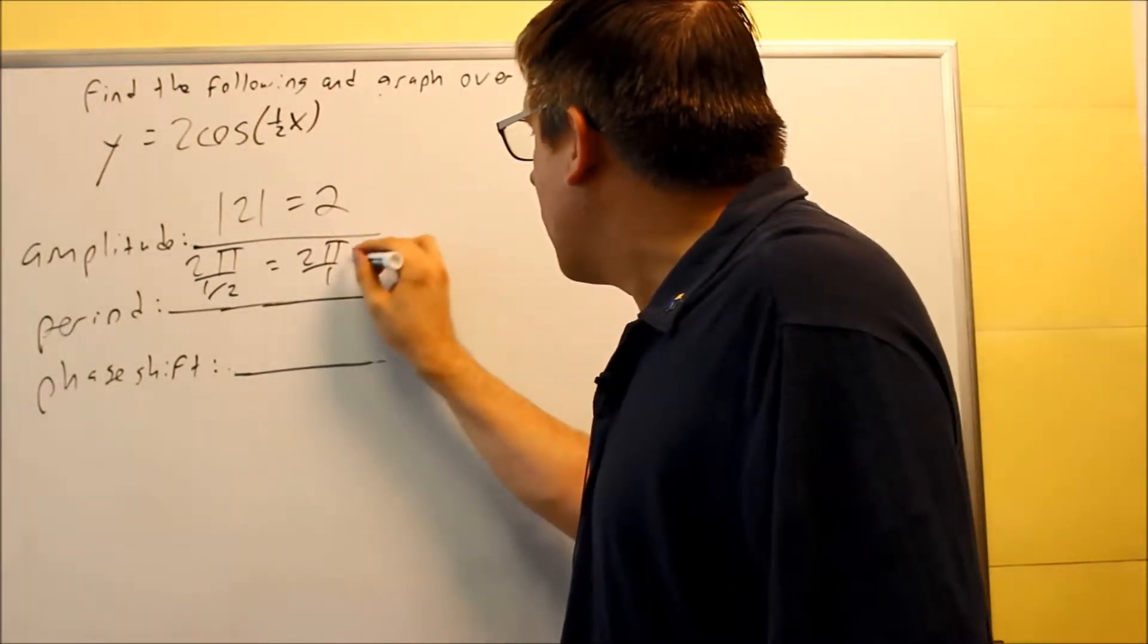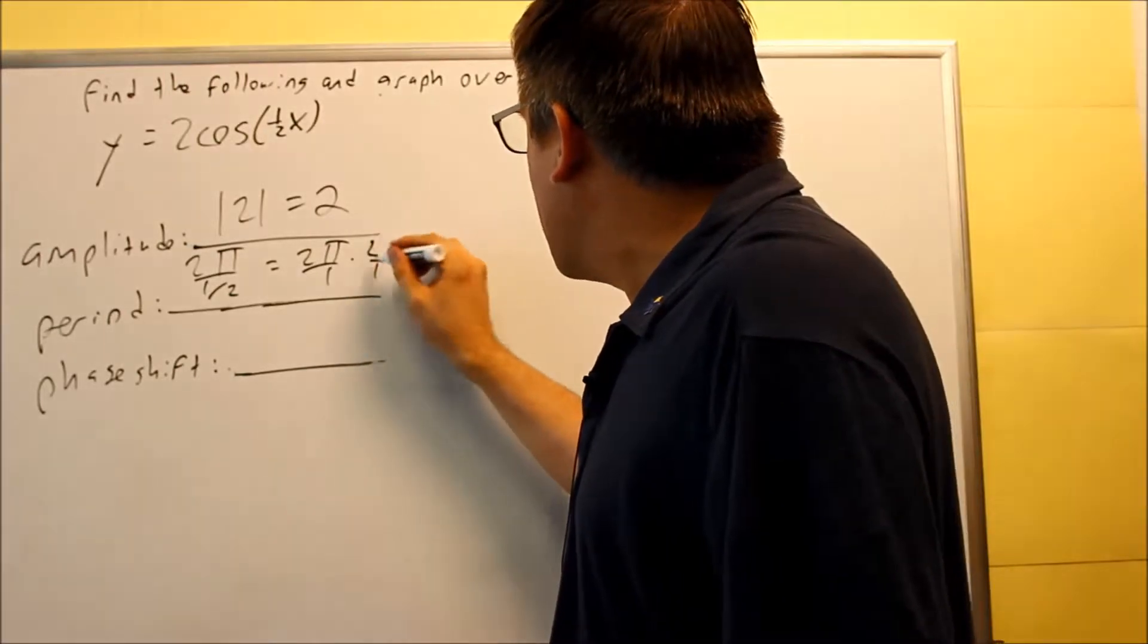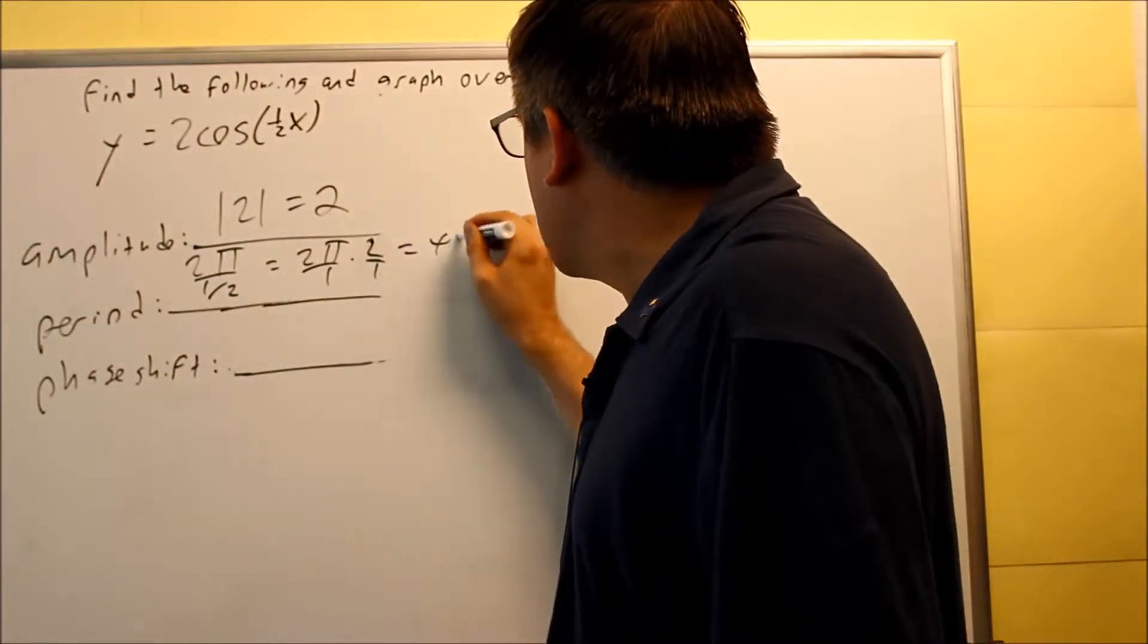If I work this out, 2π over 1 times 1 half, or reciprocal rather, so 2 over 1, you're going to get 4π.